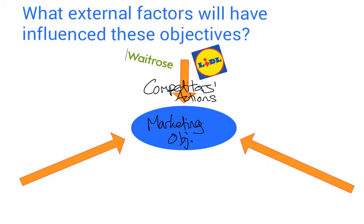Tesco has had to revamp its marketing objectives in the face of Lidl and other discounters. One of its objectives is specifically based around price and value, in direct response to the growth of the discounting chains. If it doesn't respond effectively and set objectives to deal with those competitors, it is really going to struggle. Competitor actions is one of the key external influences.